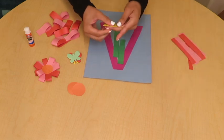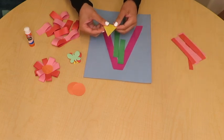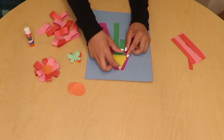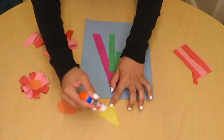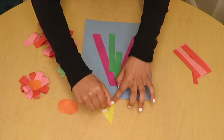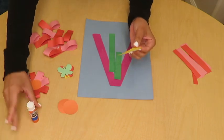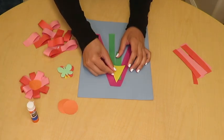Then we're going to take our little triangle. Here it is. And I'm going to put glue, and that's going to cover the stems down at the bottom. So I'm going to go ahead and take our yellow triangle. That's going to be our vase. And I'm going to put glue and glue it down at the bottom like this.